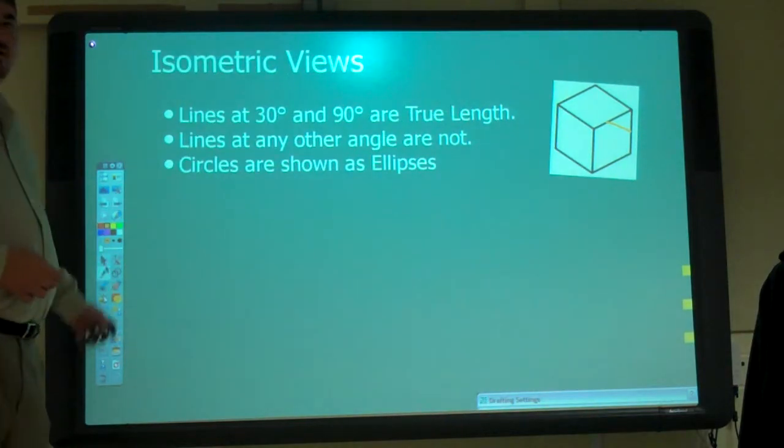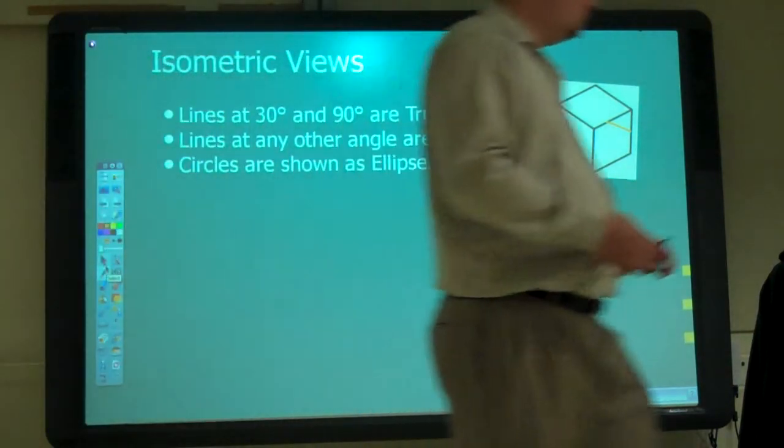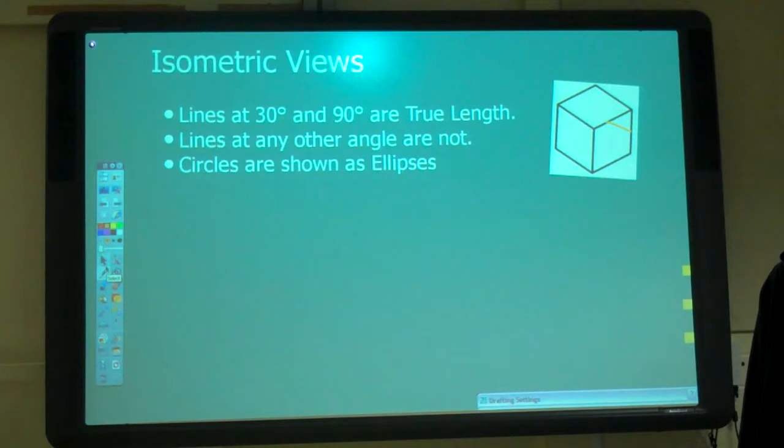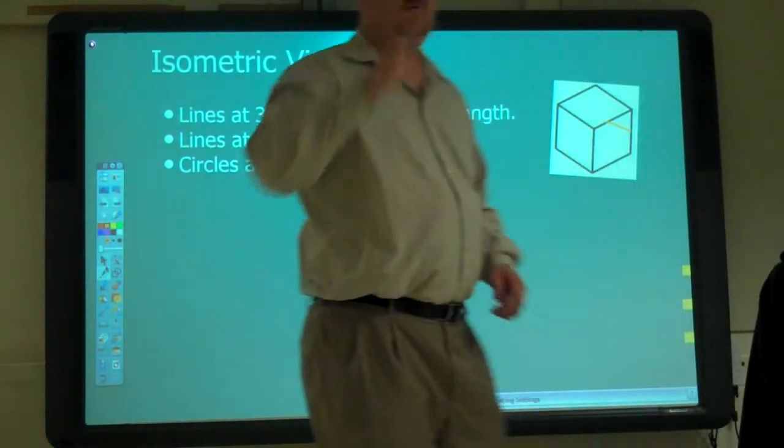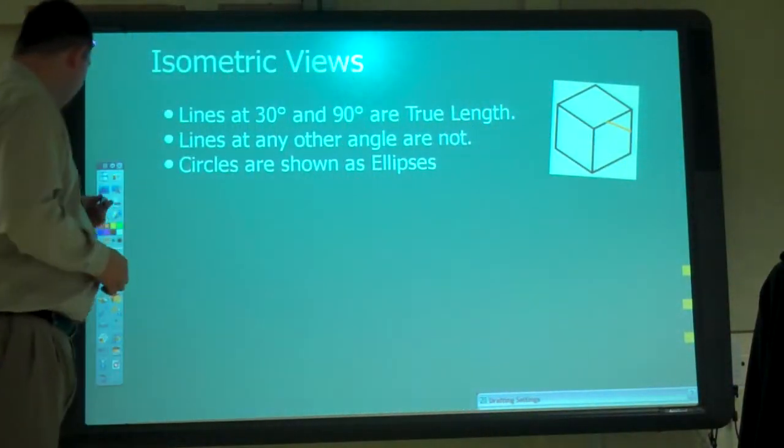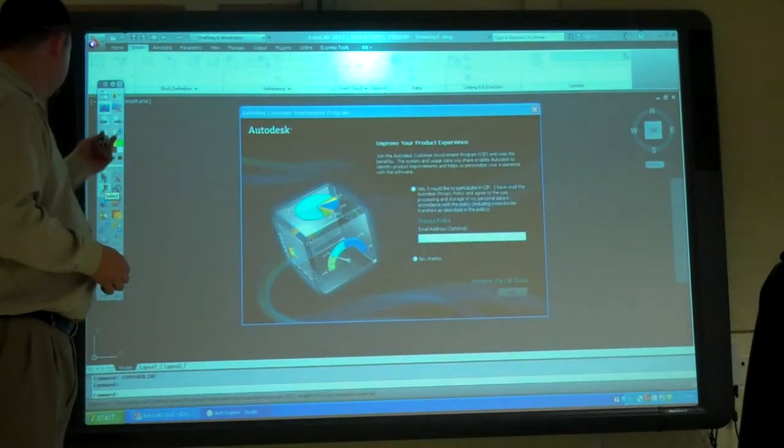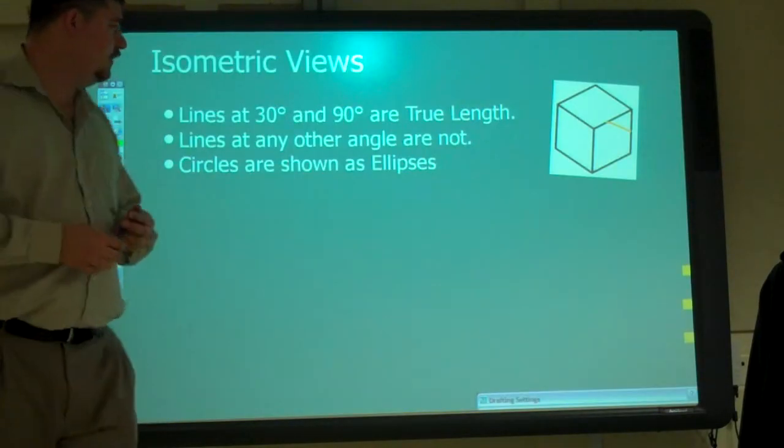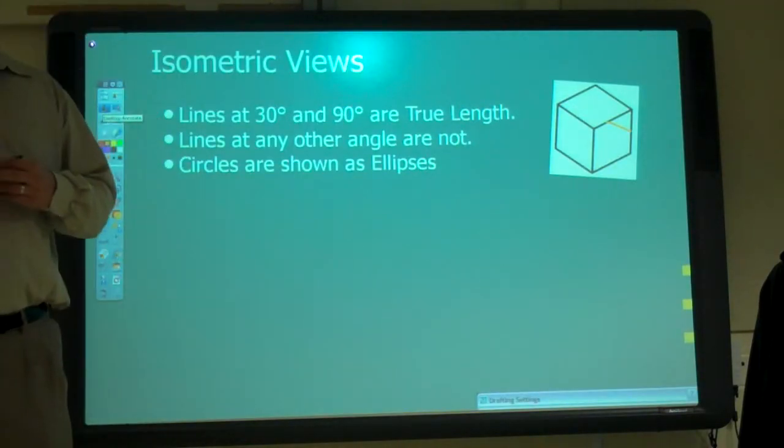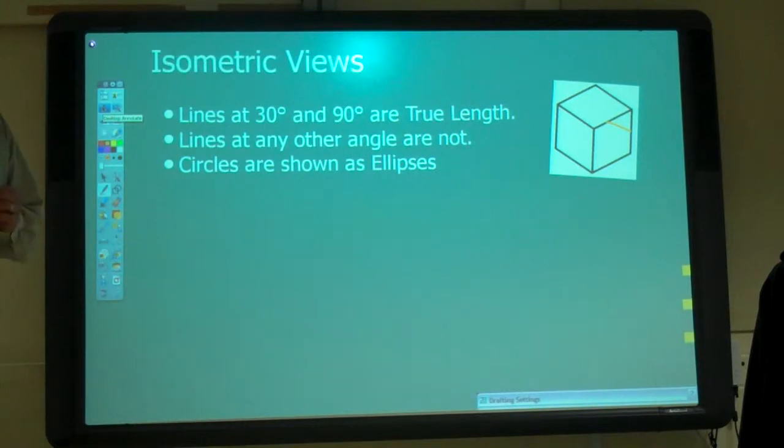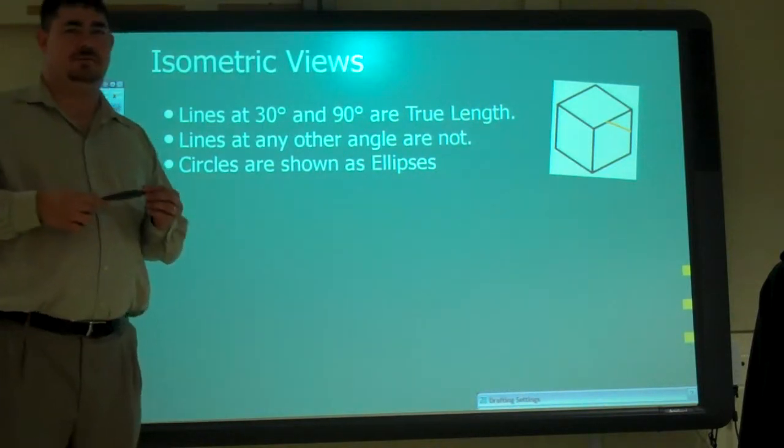And circles are ellipses, right? So we turn a circle on the side, we need an ellipse. How do we draw ellipses in AutoCAD? Isometric ellipses. Isocircle? Yeah, we use an isocircle in the ellipse command.